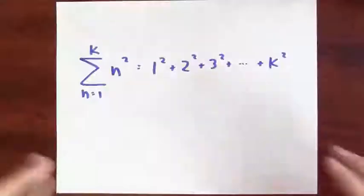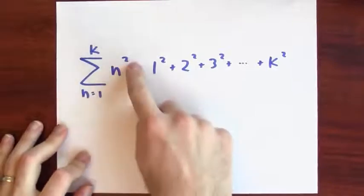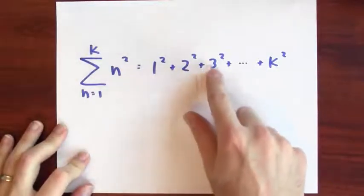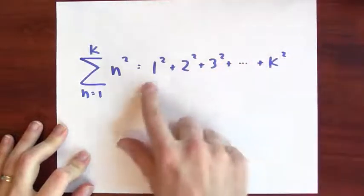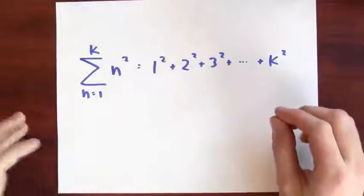What do we get if we add up a bunch of perfect squares, say the first k perfect squares? What I'm asking for is a formula for this sum, the sum of n squared as n goes from 1 to k. So 1 squared plus 2 squared plus 3 squared and so on until I get to k squared. What do I get if I add up the first k perfect squares?